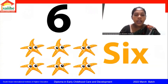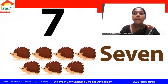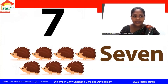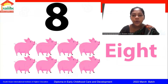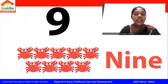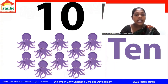Number 6. Can you count how many stars are there? 1, 2, 3, 4, 5, 6 — 6 stars. Next number is number 7. 7 porcupines. Number 8 — 8 pink pigs. 1, 2, 3, 4, 5, 6, 7, 8. Next number is number 9. 9 crabs. Our last number is 10 — 10 octopus.